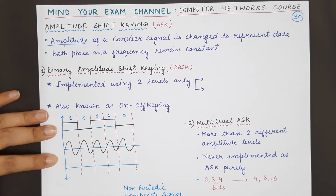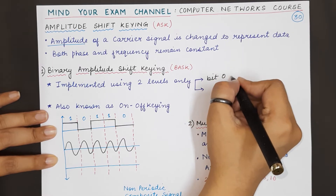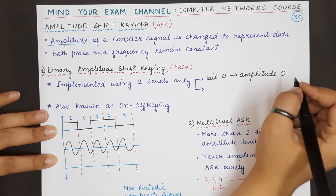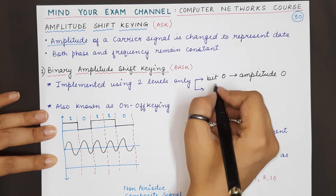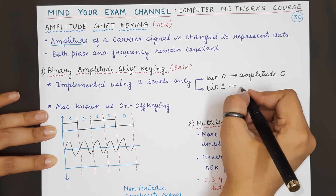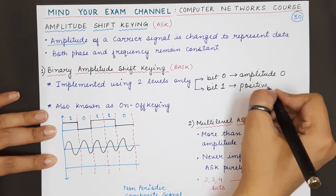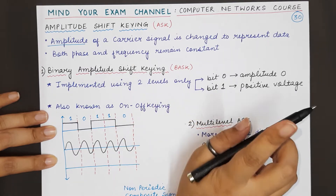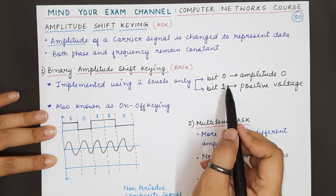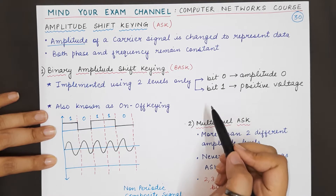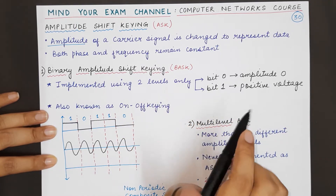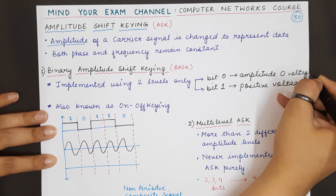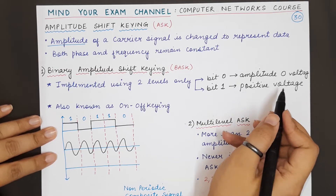What does that mean? It basically means that bit zero will be represented by amplitude zero — the amplitude of the carrier signal will be reduced to zero when we have to represent bit zero. When we have to represent bit one, we will represent it by a positive voltage. This positive voltage is first decided between the sender and receiver and remains constant, so that one value of positive voltage is used for representing all bits which are one during transmission. There are only two values of amplitude: zero voltage and the positive voltage for bit one.